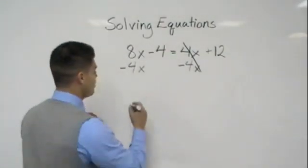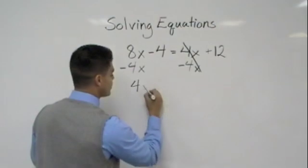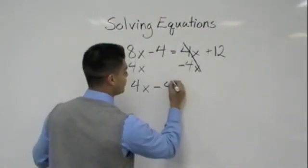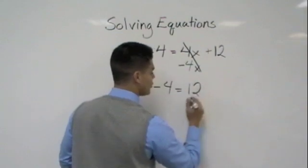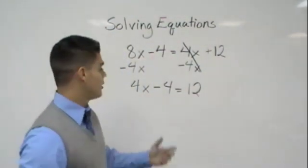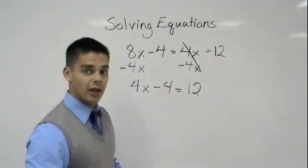8x minus 4x would give me 4x minus 4 and bring down the 12. Now as you can see here I bring everything else down.